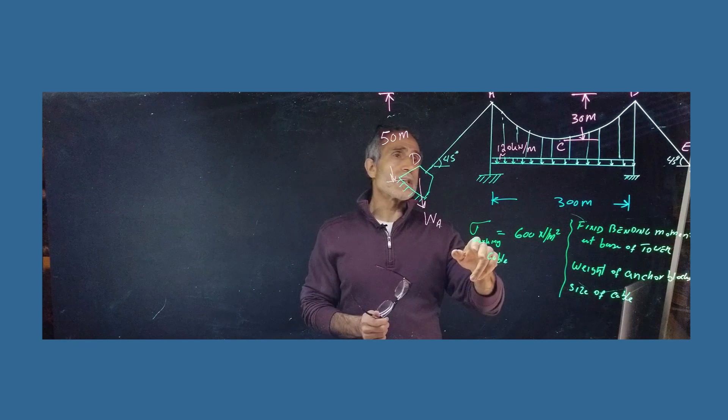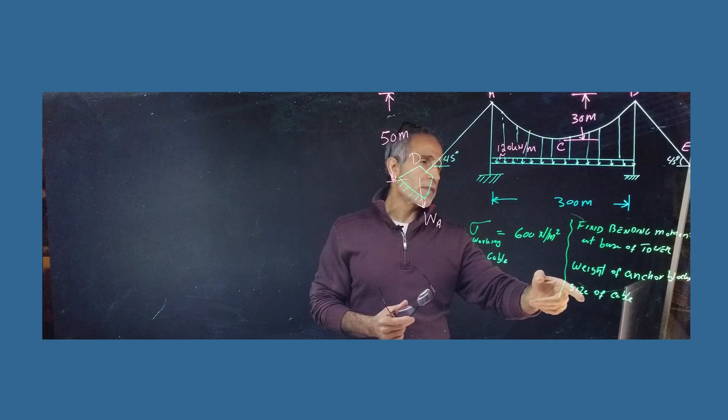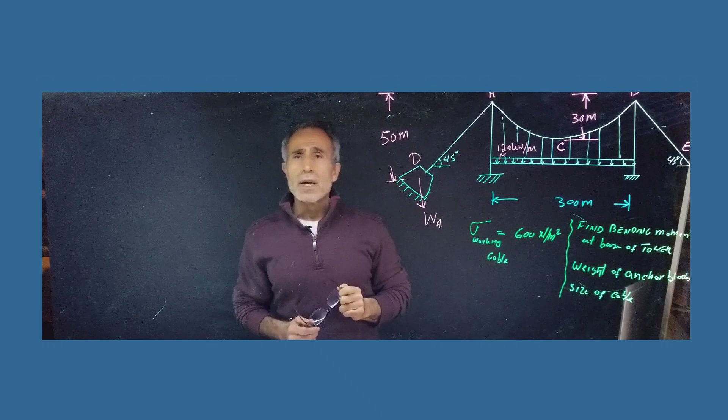And the requirement, one of the criteria is given the allowable working stress for the cable is 600 newton per meter squared, and we'd like to find out the bending moment at the base of the tower, weight of the anchor block, and size of the cable. So obviously before we do that we have to find out what's the tension on the cable is.